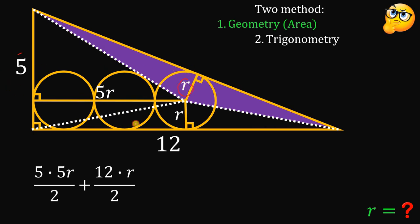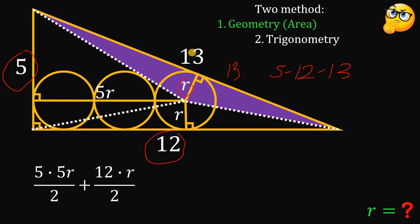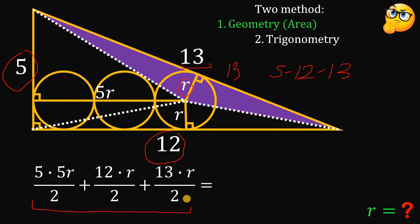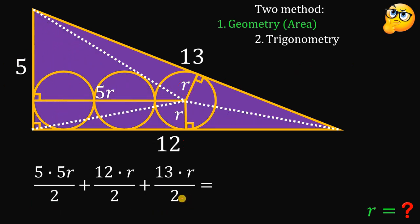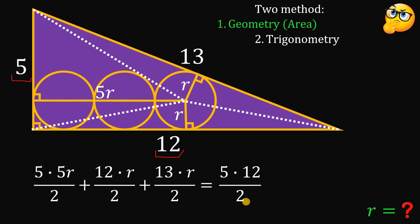This is a 5-12-13 right triangle — the famous Pythagorean triple — so the hypotenuse must equal 13 units. Now we have the base of the third triangle, so its area equals 13r / 2. The sum of these three areas must equal the area of the whole right triangle, which has base 12 and height 5, giving an area of (5 × 12) / 2.